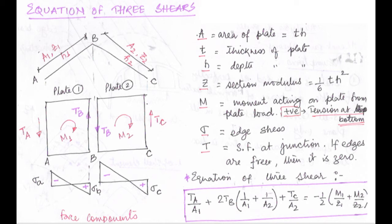In the last diagram, sigma A and sigma B are the edge stresses at points A and B respectively, and sigma C is the stress at free end C. The equation of three shears is: TA/A1 + 2TB(1/A1 + 1/A2) + TC/A2 = −(1/2)(M1/Z1 + M2/Z2). Please note down the basic diagram and this formula before I proceed to a numerical problem.